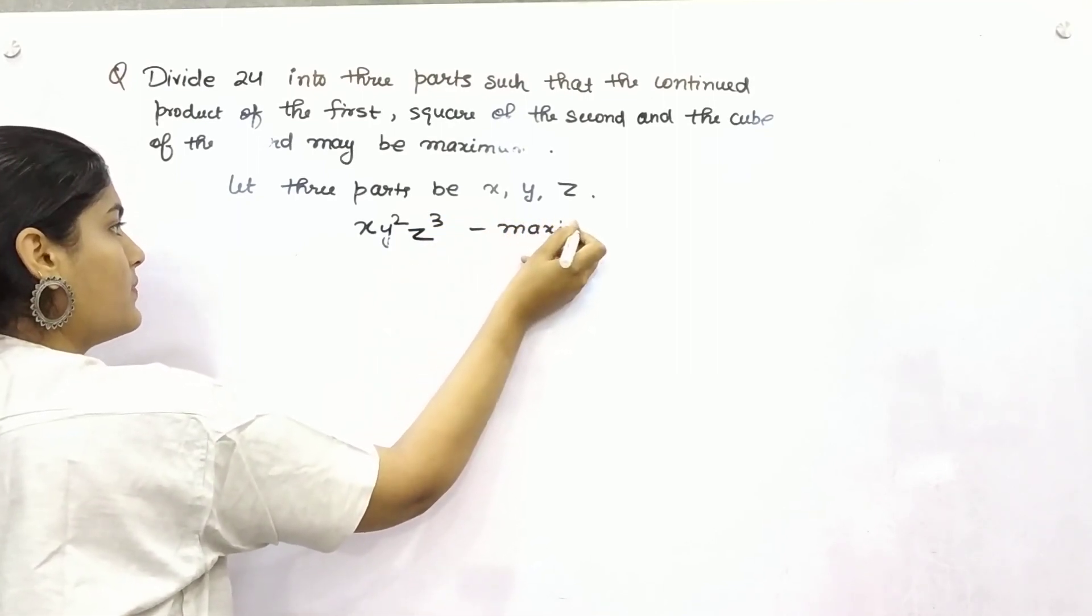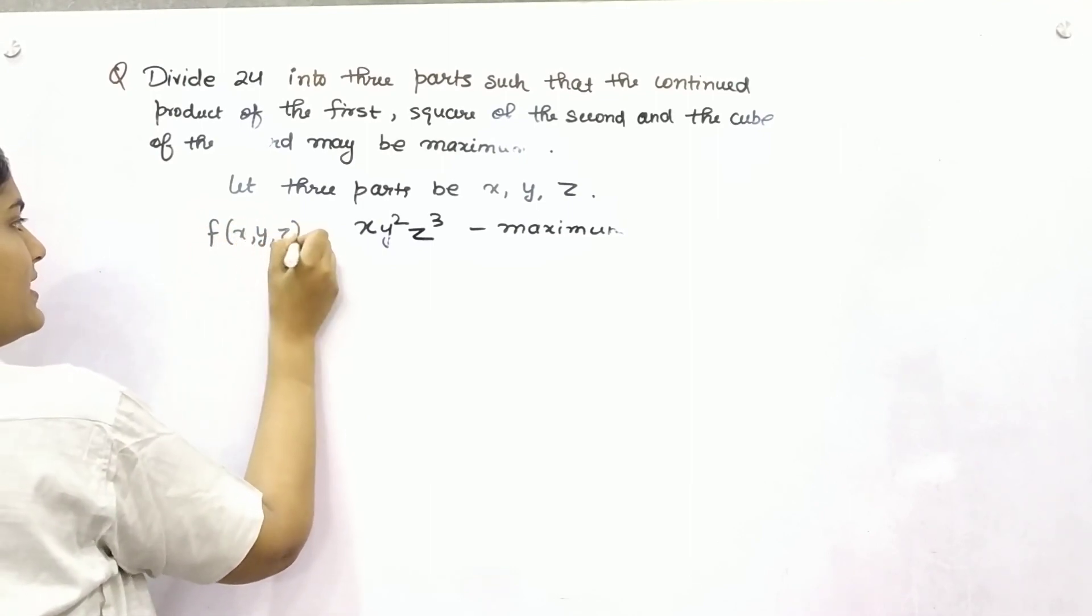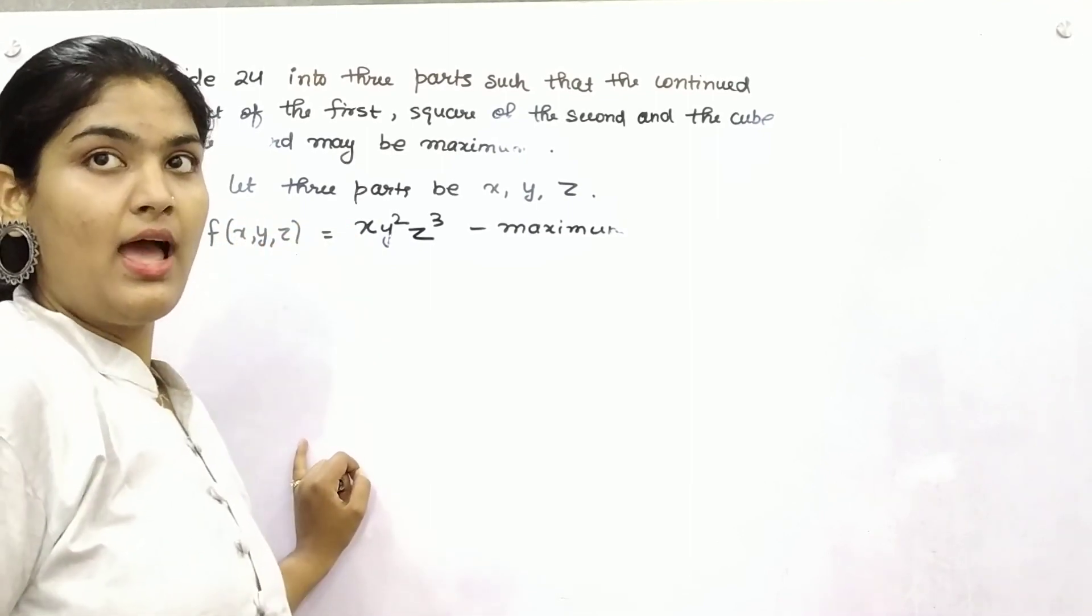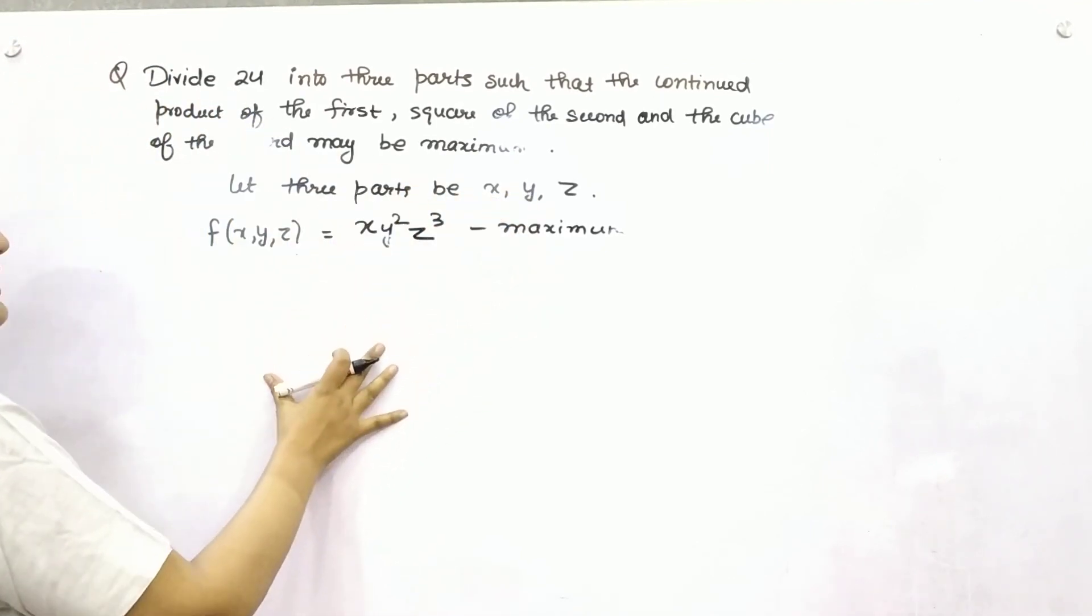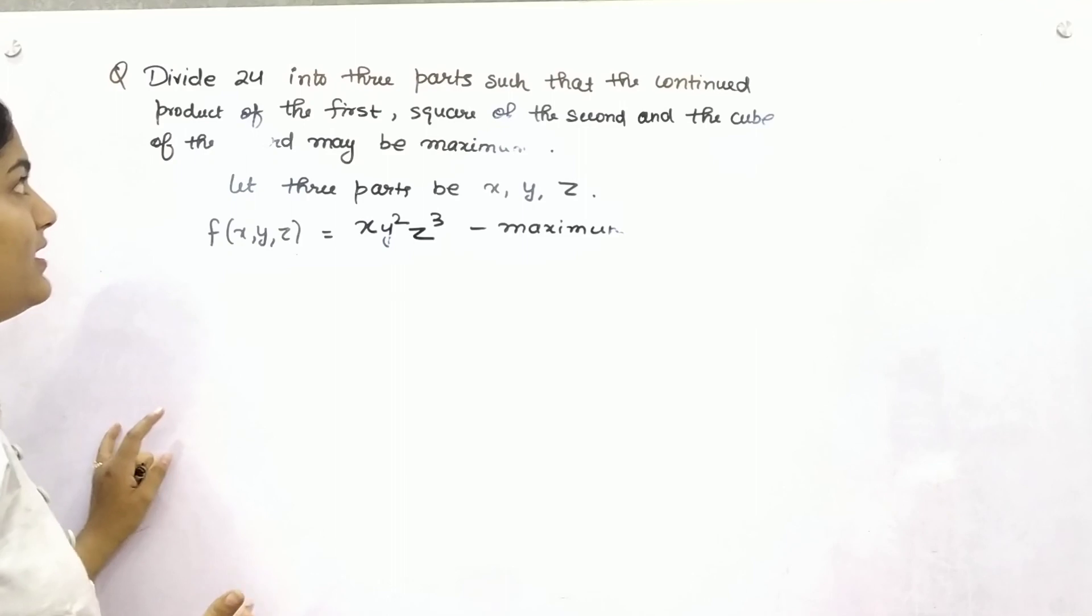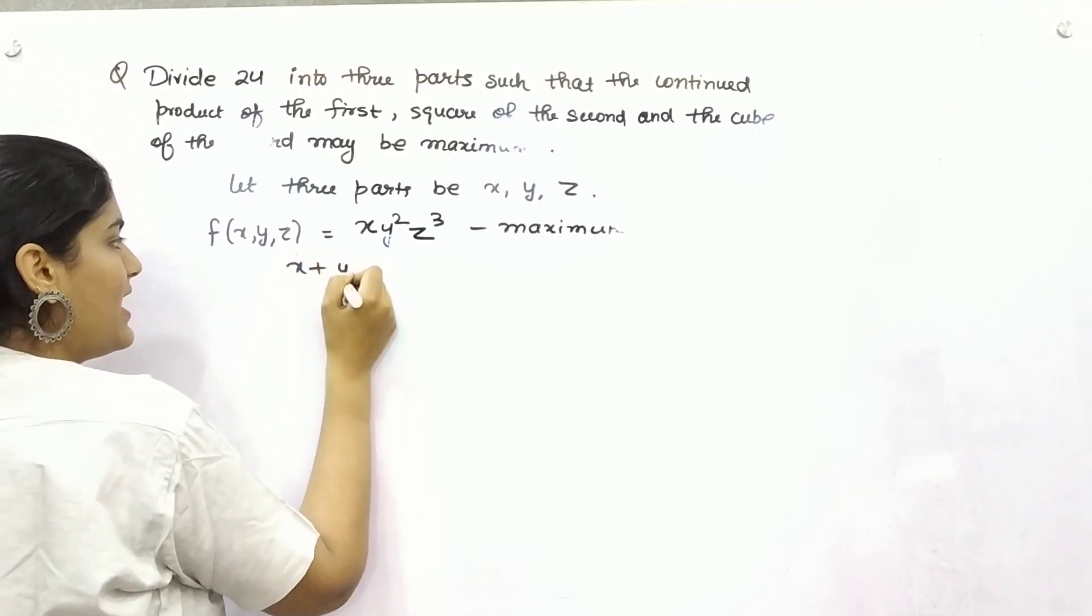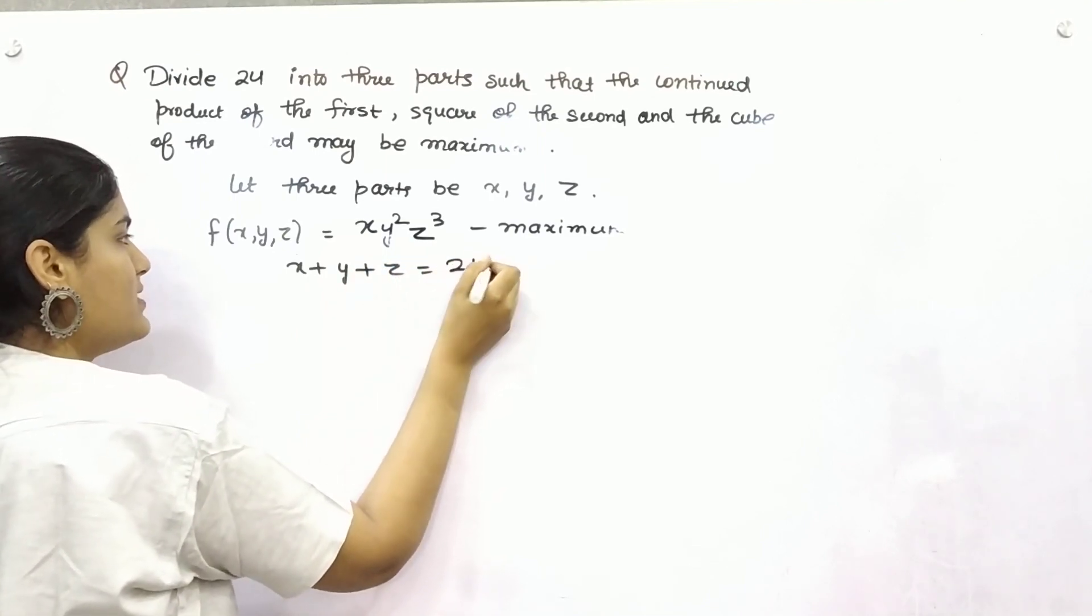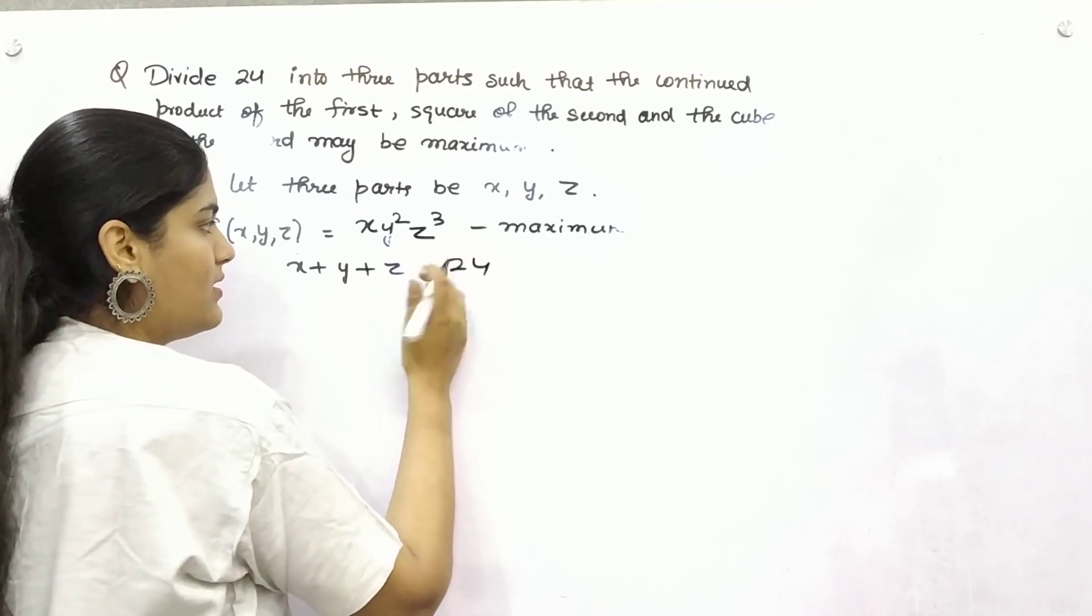So this is your function in terms of x, y, and z: f(x,y,z) = x * y² * z³. Now what is given to you? That these x, y, and z are divided in such a way that the sum is 24. So x plus y plus z equals 24 is your another equation if you take it here.